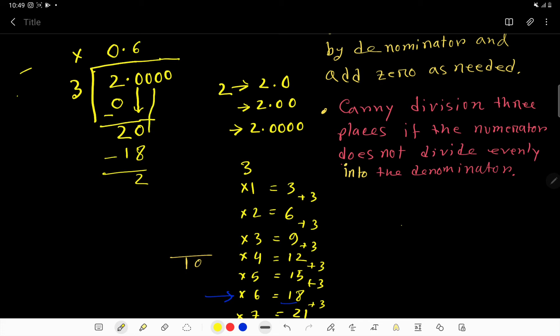Now, bring down this second 0. So we are getting 20. So we will take 6 to the quotient. We will write here 18. So, 2.